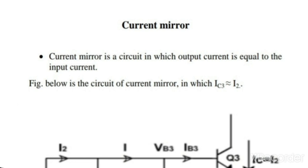Current mirror is a circuit in which output current is equal to the input current. In other words, the output current is a mirror image of the input current. The current mirror is a special case of constant current bias and therefore it can be used to set up constant emitter currents in differential amplifier stages.